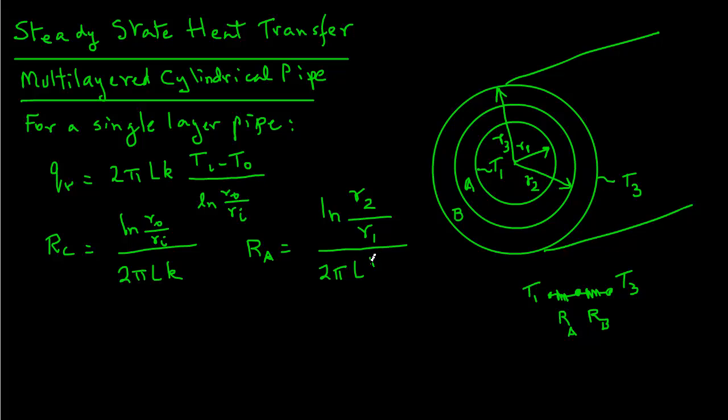Similarly, we have the second resistance RB which will be natural log of R3 over R2 divided by 2πLKB.